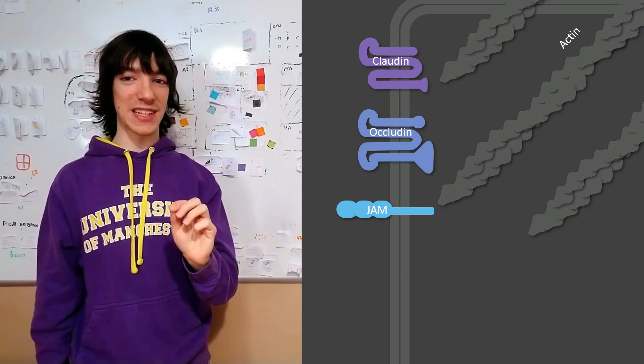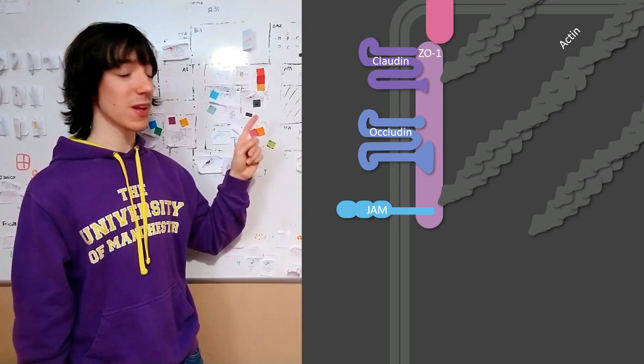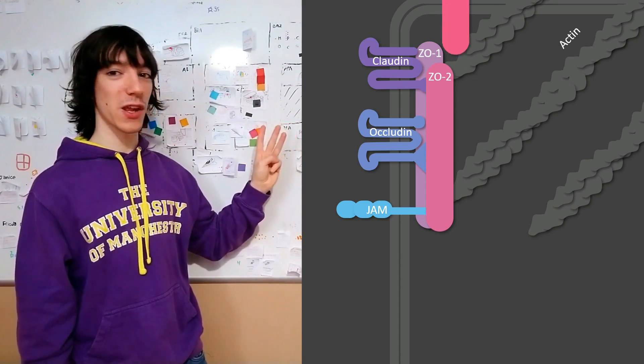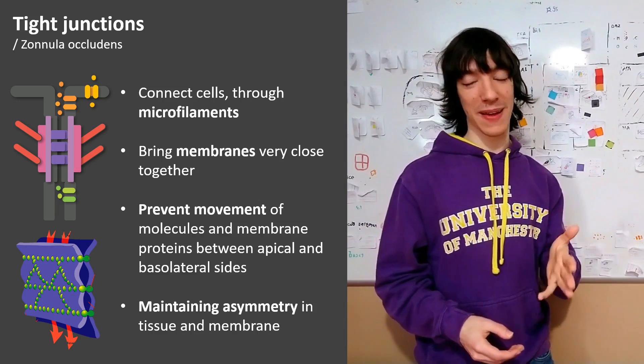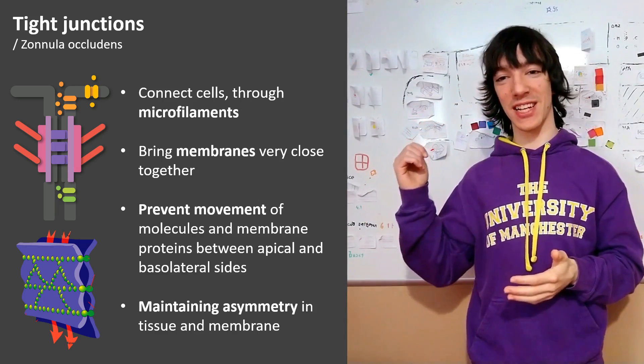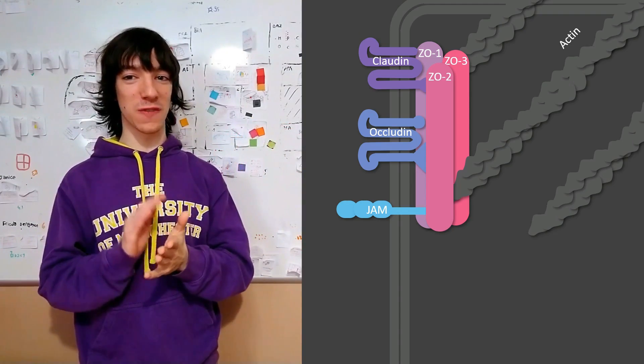They need adapters. In the case of tight junctions, these adapters are zonula occludens 1, zonula occludens 2 and zonula occludens 3, abbreviated as ZO. Zonula occludens, by the way, is the name of tight junctions in Latin.